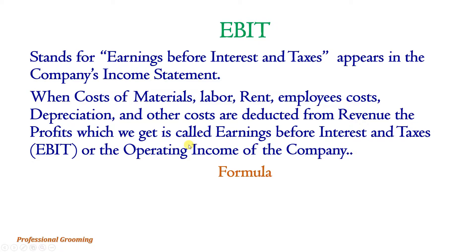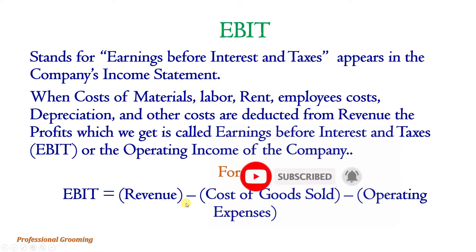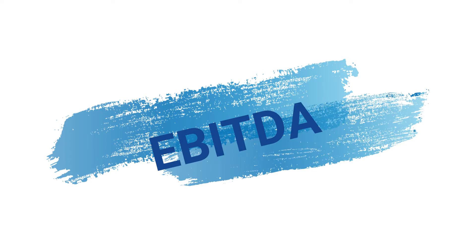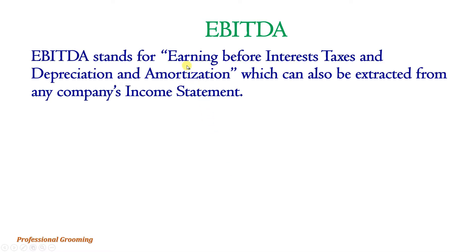How can we calculate EBIT? The formula is: EBIT equals revenue (or total sales) minus cost of goods sold (the direct expenses) minus operating expenses, which include rent, employee costs, depreciation, and so on. Now let's discuss what EBITDA is. EBITDA stands for Earnings Before Interest, Taxes, Depreciation, and Amortization, which can also be extracted from any company's income statement.